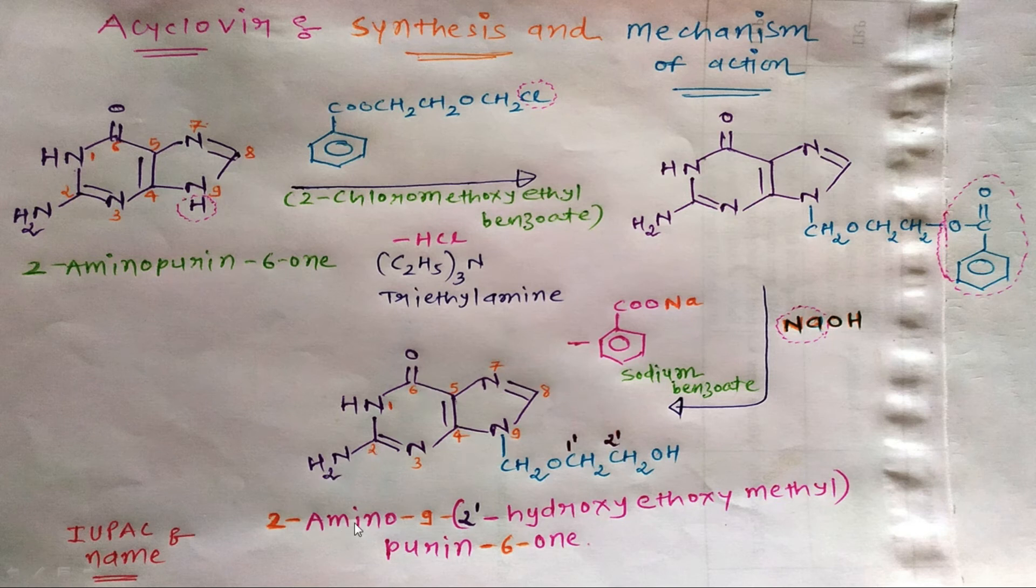Hydroxy is present on the second carbon. The name is: 2-amino-9-(2-hydroxyethoxy)methylpurine-6-one. At position 9, methyl is present; on the methyl, ethoxy is present; and on the ethoxy at the second carbon, hydroxy is present. So the complete IUPAC name is 2-amino-9-(2-hydroxyethoxy)methylpurine-6-one.